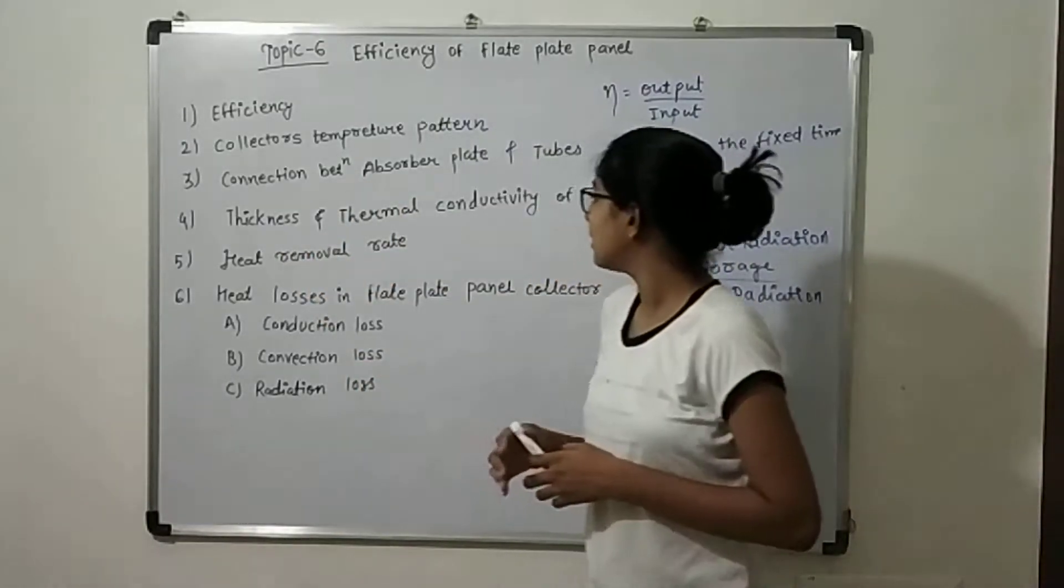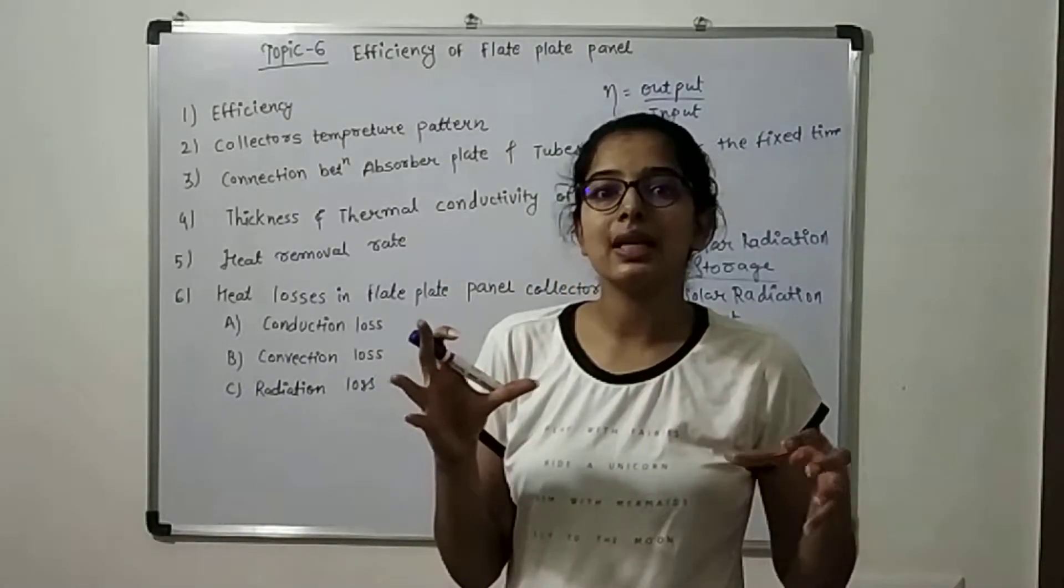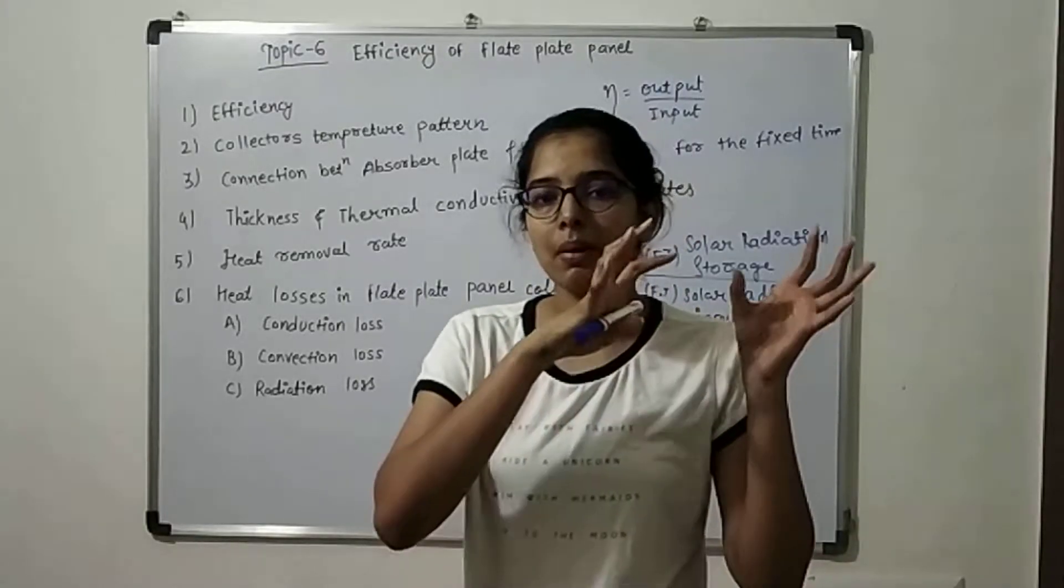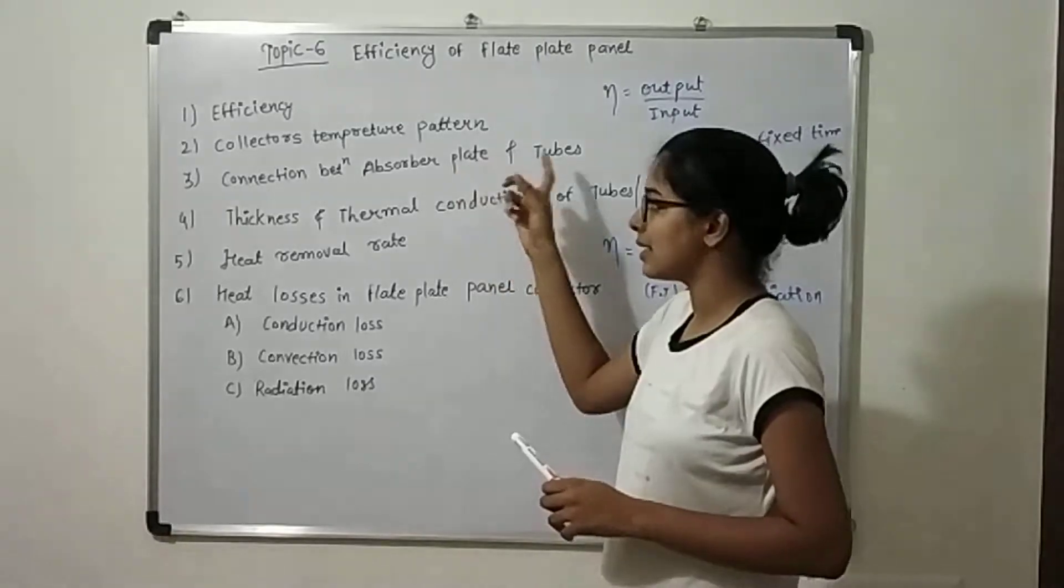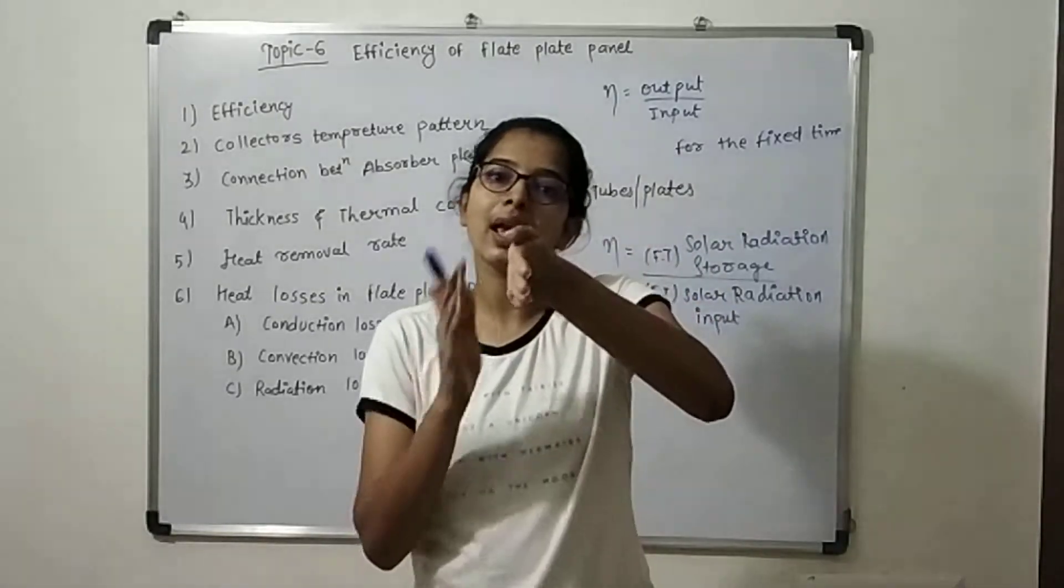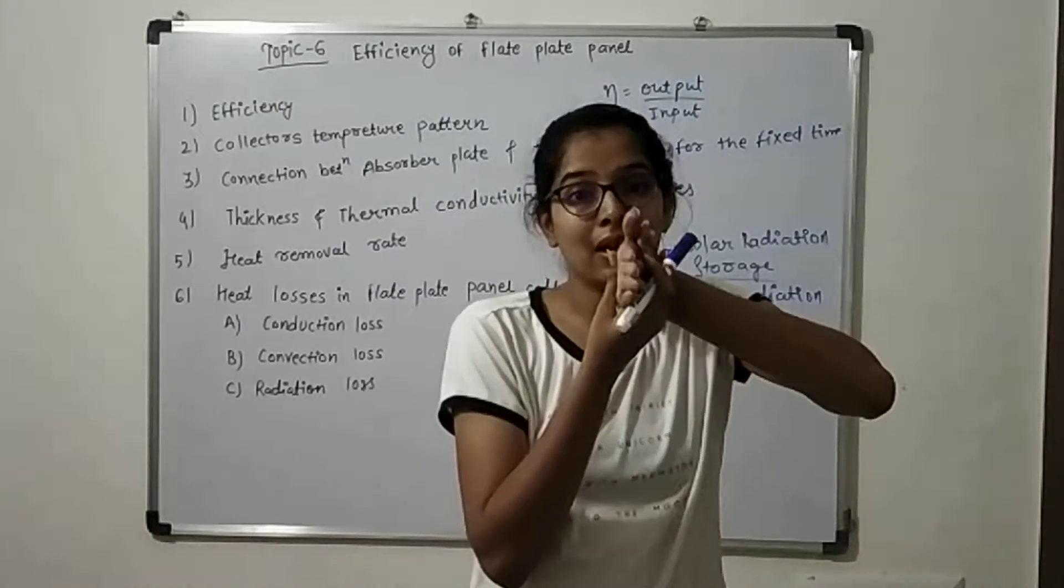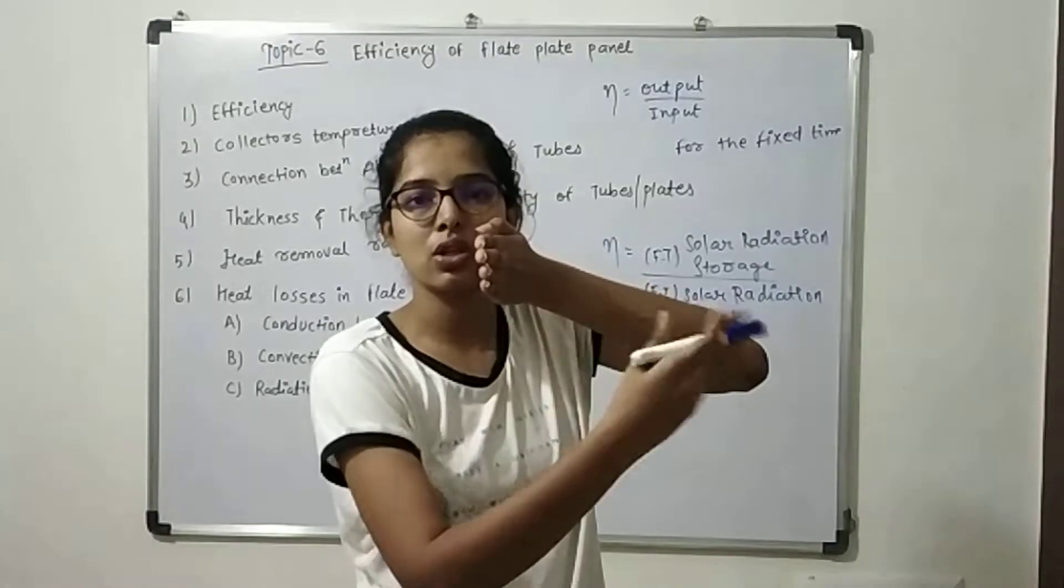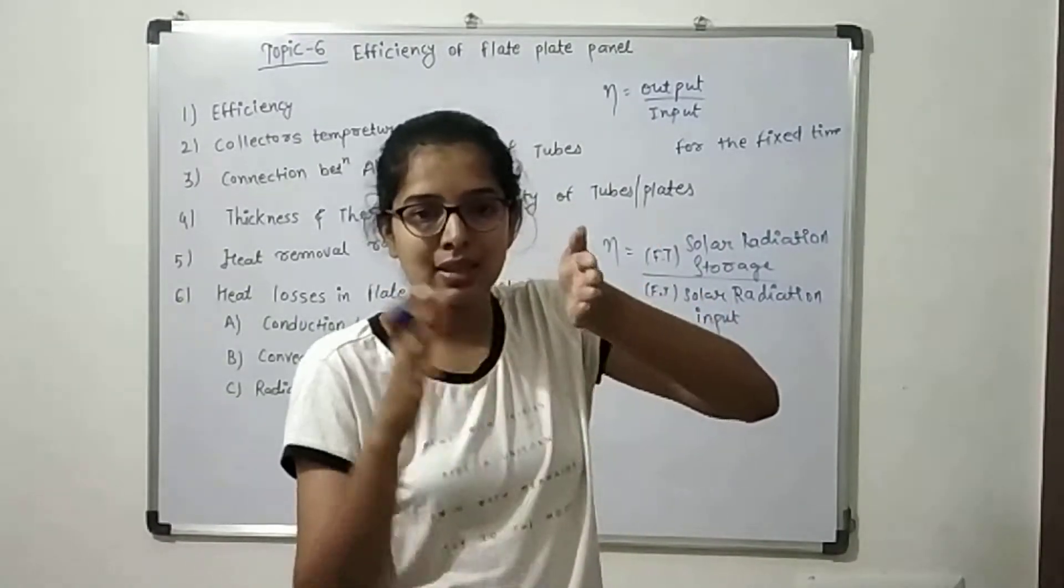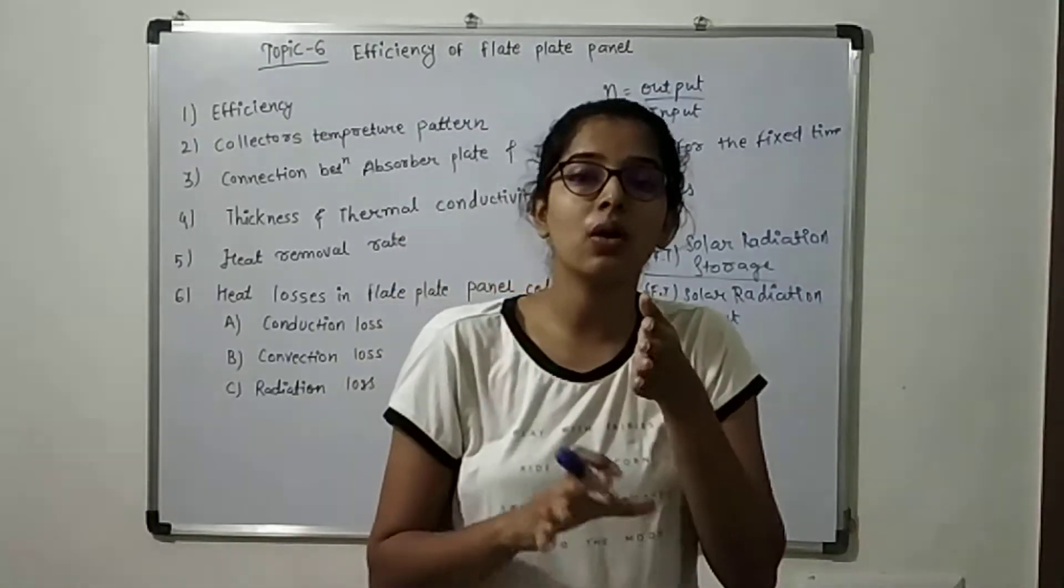Fourth point is thickness and thermal conductivity of the tube. You can see that you can use this material. This material is used in the speed of heat transfer. The conductivity is used in the speed of heat transfer. You can use the material like plates and tubes. This thermal conductivity is used in the speed of heat transfer. The loss of the heat is much higher. So, the loss of the heat is small.